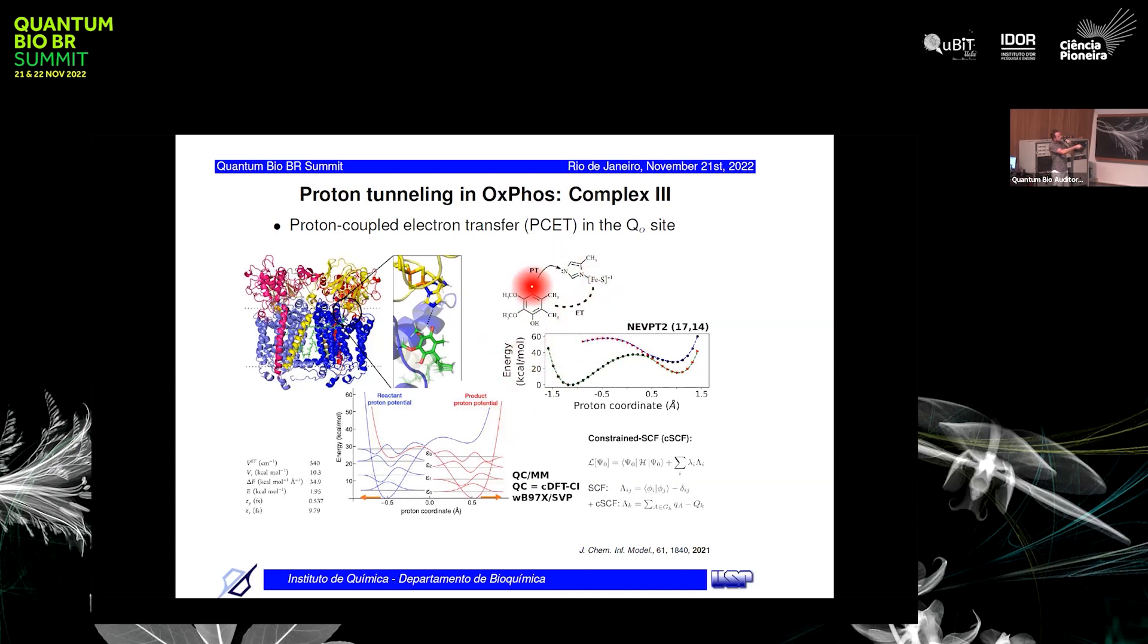Here it's coupled to the proton transfer, so both reactions, electron and proton transfer, will have to go at the same time. Using similar methodology, we obtain a proton potential and calculate again the vibrational functions for the proton transfer that are shown here for the ground state, first, second, and third excited states. We see that the penetration of the vibrational functions through the barriers is quite small, so tunneling again is not very important for this reaction.